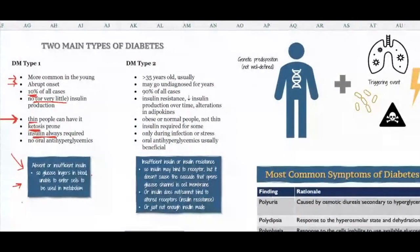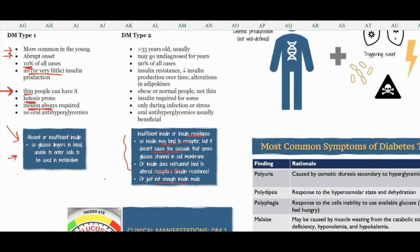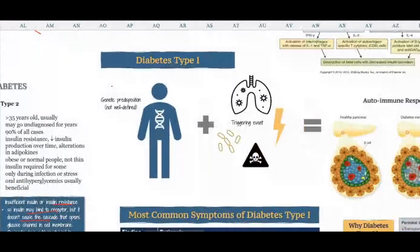In diabetes type 2, you have insulin resistance. Insulin can bind to the receptor but might not cause the cascade that opens the glucose channel, or it can't bind at all. You can also have where not enough insulin is made, but honestly it's usually one of those first two mechanisms causing type 2 diabetes. We'll talk a lot more about that next week.